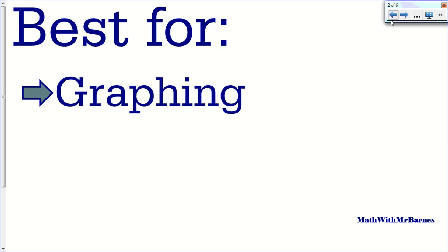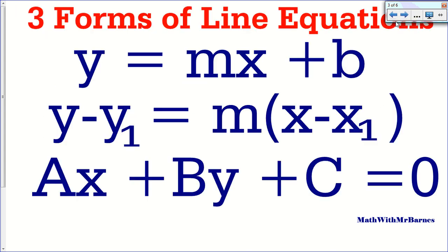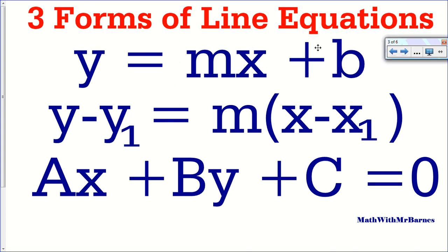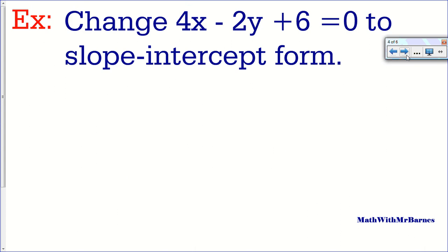So this is best for if you're graphing — if you're given general form of a line and you have to graph something. These are the three forms of a line: Y equals MX plus B, this is slope-intercept form. The second form is called slope-point form: Y minus Y1 is equal to M times X minus X1. And then of course the last form is general form. If you need more familiarization about general form I have a video on my YouTube channel you can search up.